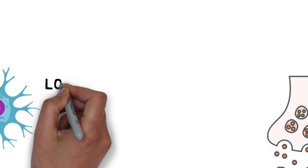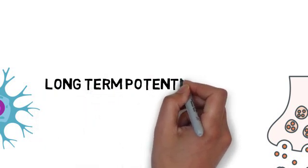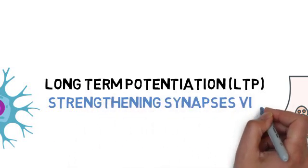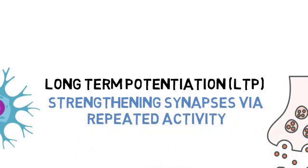The first is long-term potentiation, or LTP, which is the process of strengthening synapses based on recent patterns of activity. When neurons are repeatedly stimulated together, their connection becomes stronger, making it easier for them to communicate in the future. LTP is crucial for learning and memory formation.